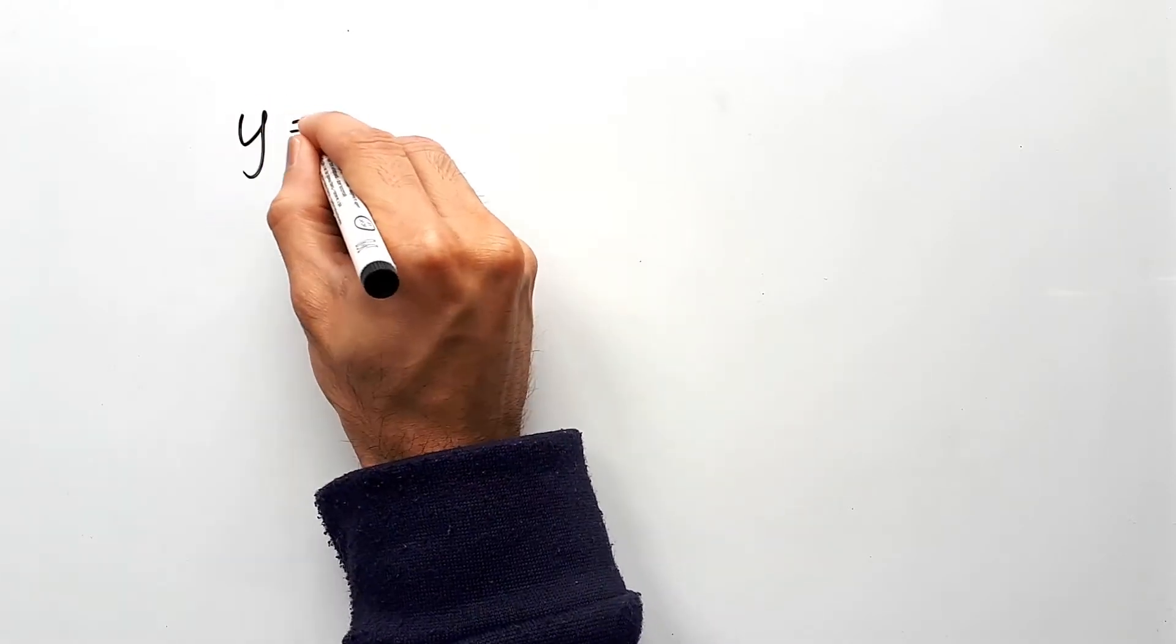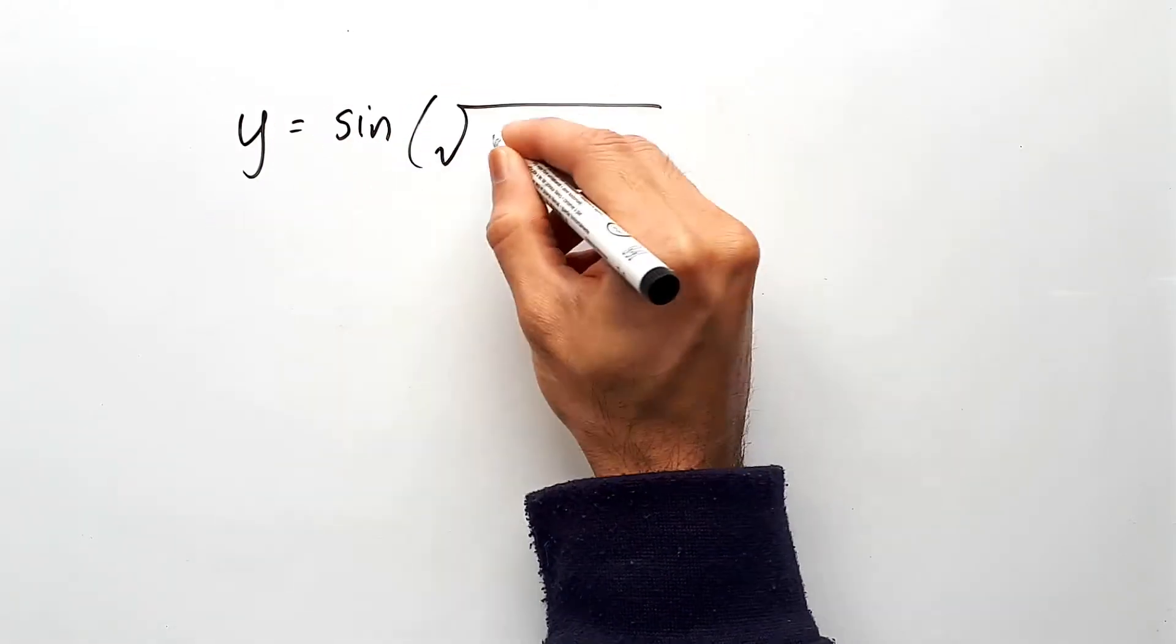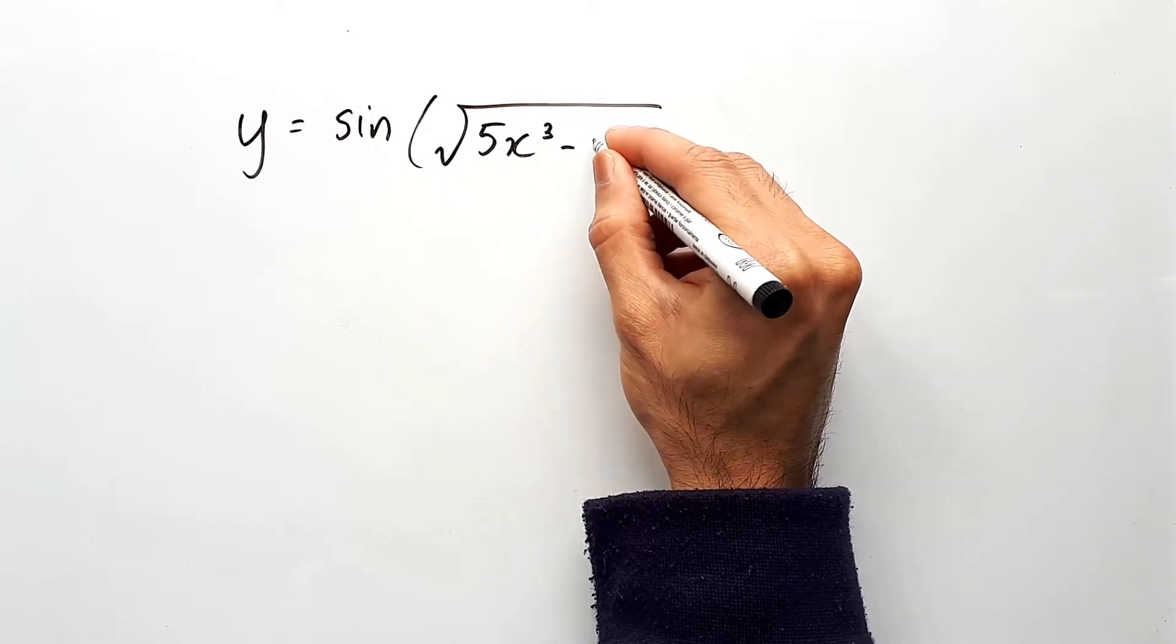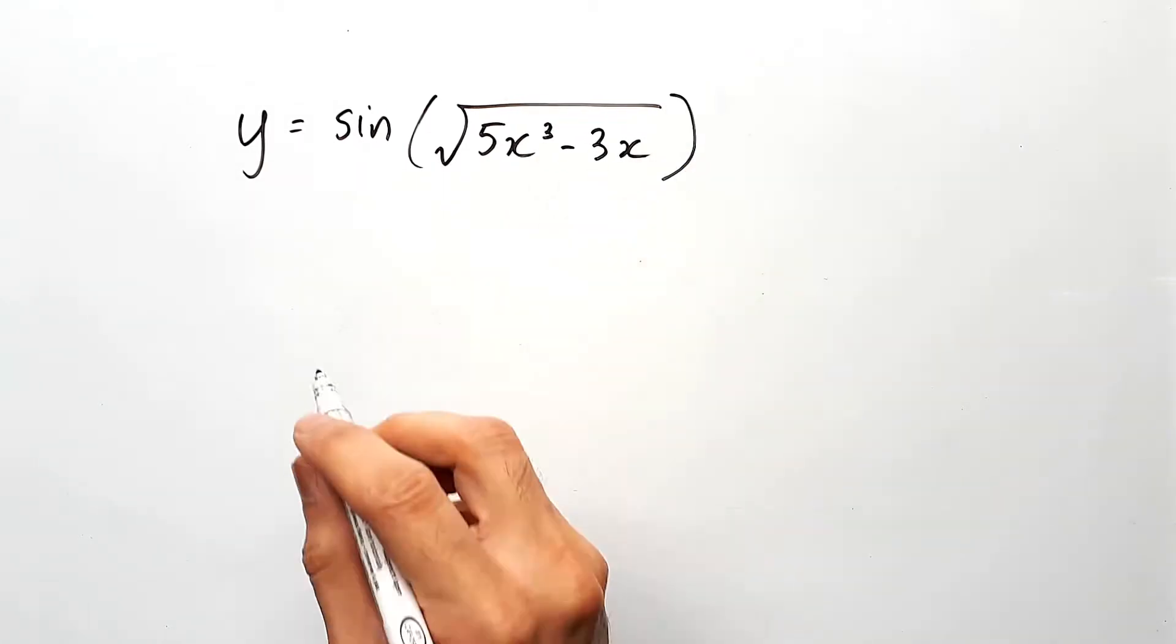Good day guys. Today we're going to be working on this question. Given that y equals the sine of square root of 5x cubed minus 3x, what is the derivative?